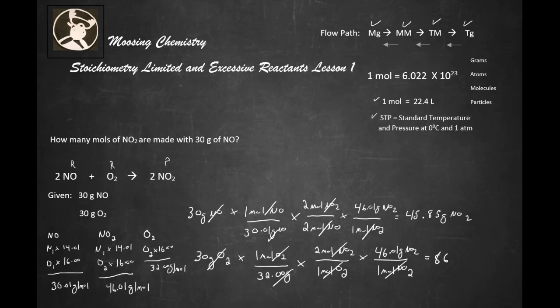45.85—that number is a lot smaller, so that tells me that this is my limiting reactant, and that tells me that the O2 is my excessive reactant.